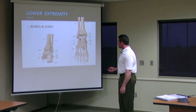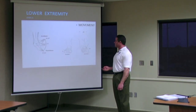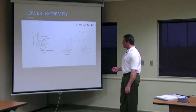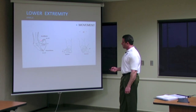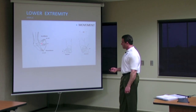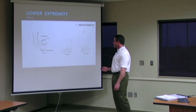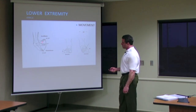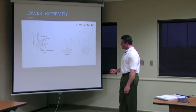Moving down to the ankle joint, you're going to have your calf muscles and the anterior tibialis. Dorsiflexion brings the anterior portion of the foot backwards, and the sole of the foot is anterior. Plantarflexion is where the sole of the foot moves posterior. So in the sagittal plane: dorsiflexion is going anterior and plantarflexion is posterior.